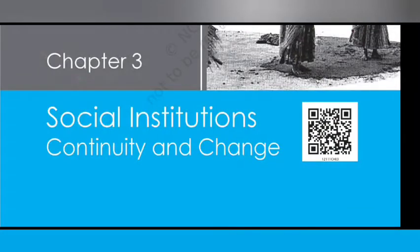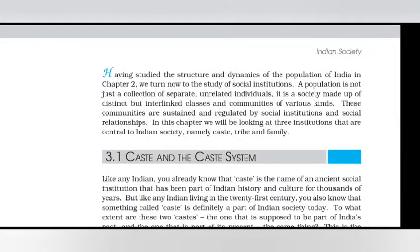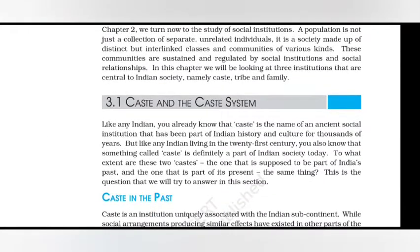Chapter 3: Social Institutions, Continuity and Change. Having studied the structure and dynamics of the population of India in Chapter 2, we turn now to the study of social institutions. A population is not just a collection of separate, unrelated individuals. It is a society made of distinct but interlinked classes and communities of various kinds. These communities are sustained and regulated by social institutions and social relationships. In this chapter, we will be looking at three institutions central to Indian society: caste, tribe, and family.